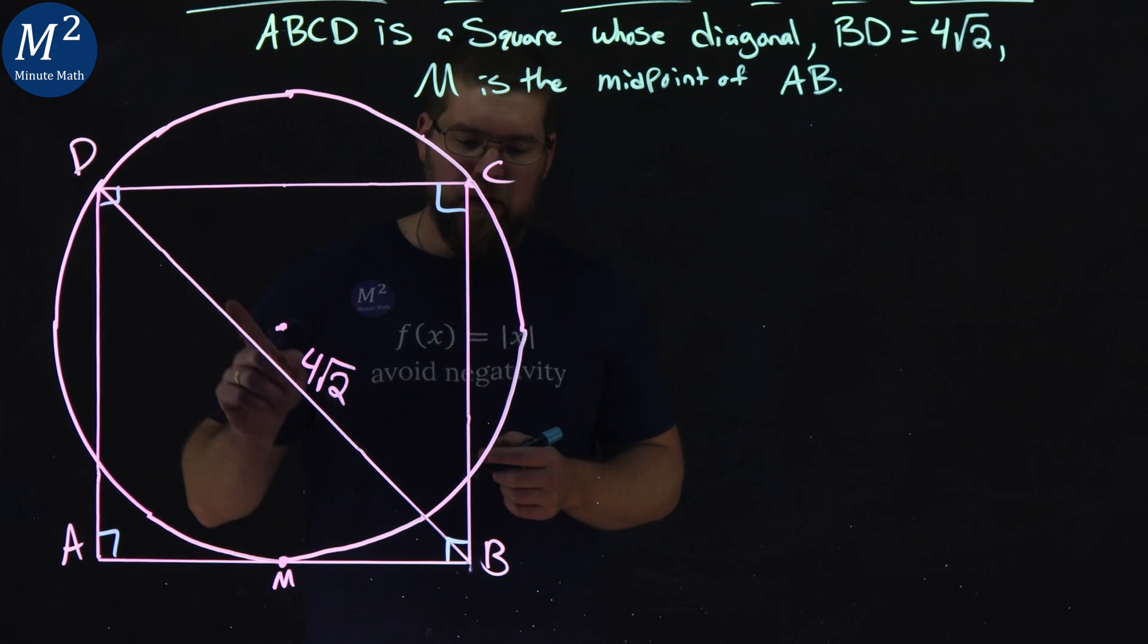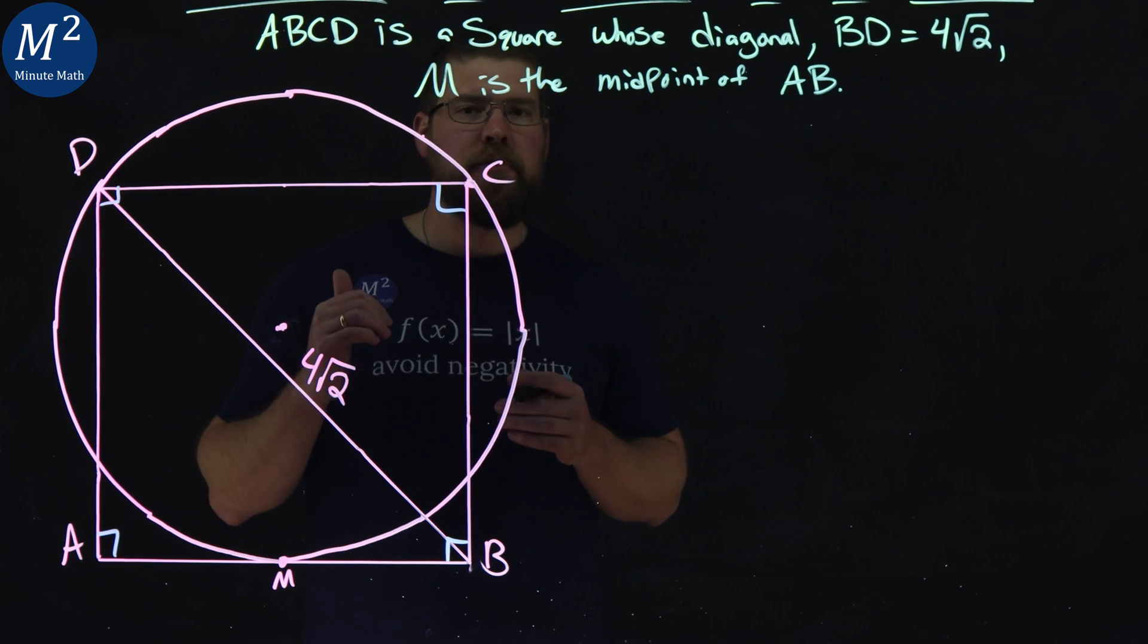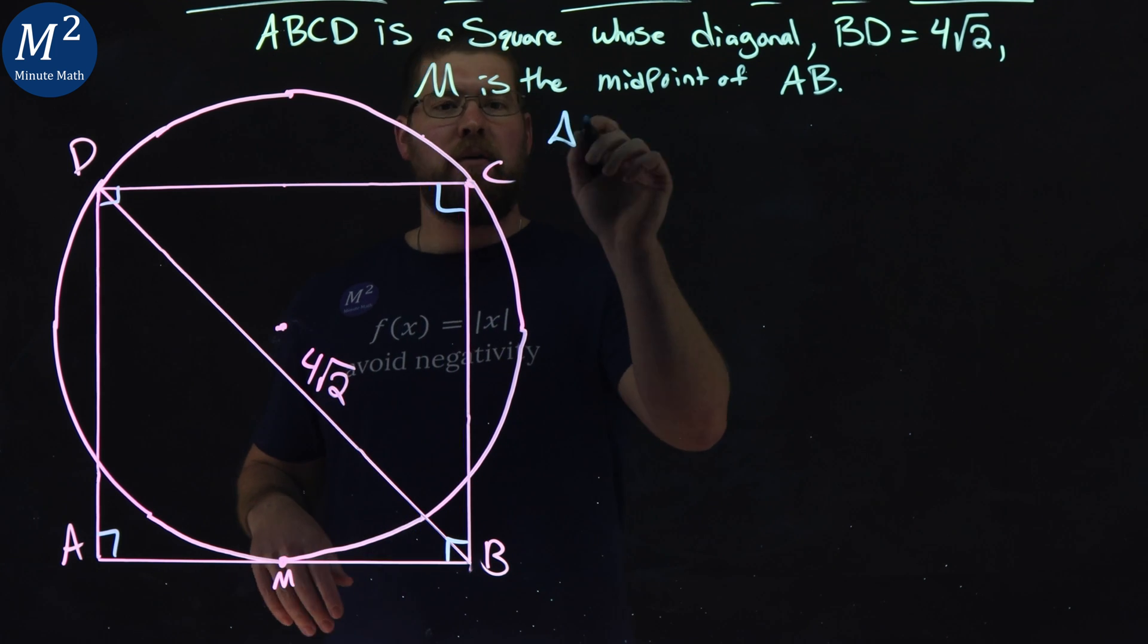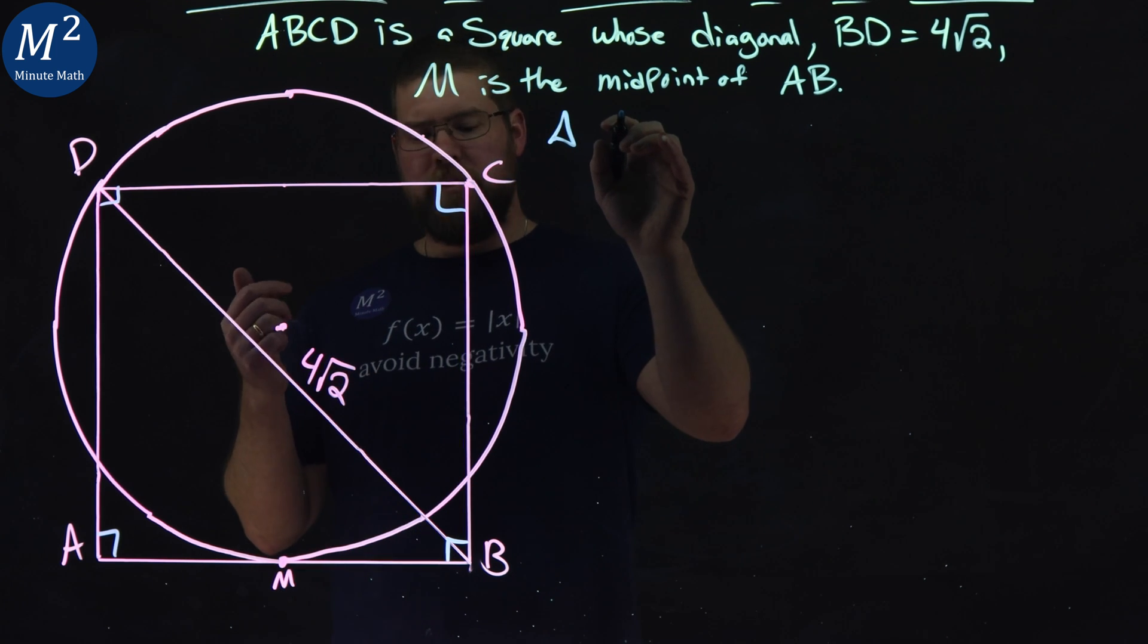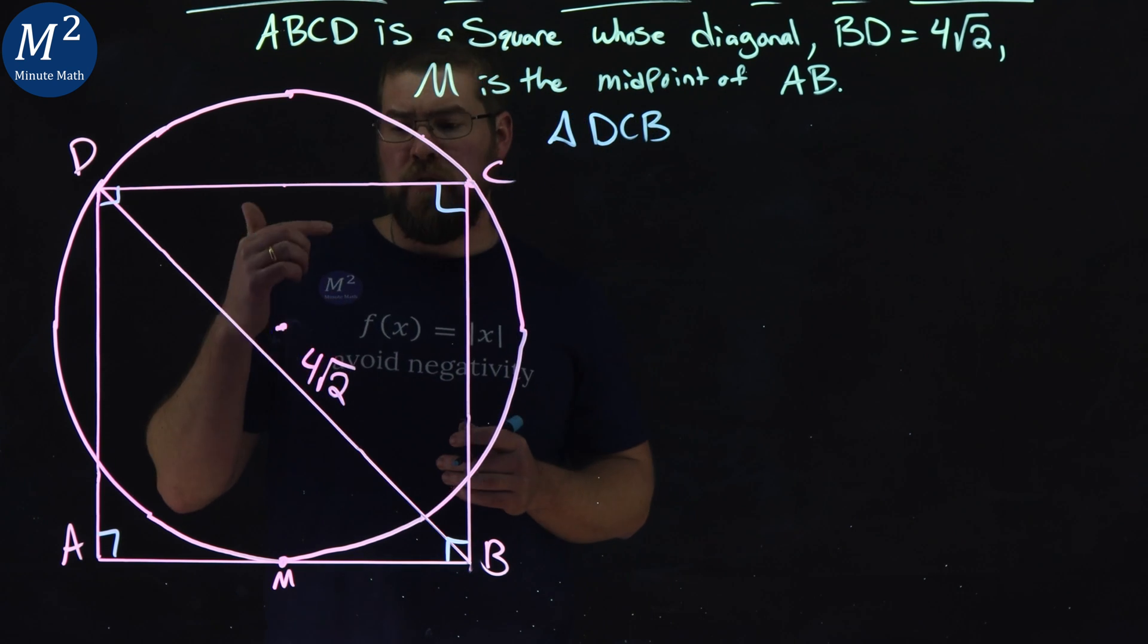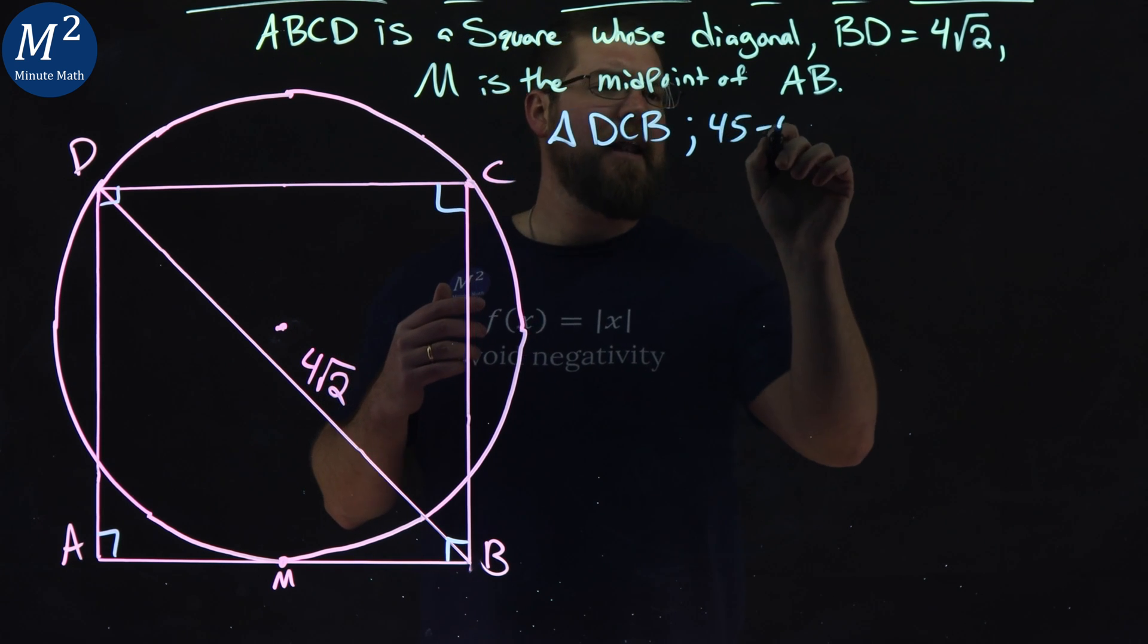Now let's look at this diagonal, BD, 4√2. That's our hypotenuse if we see a right triangle. Triangle, let's call it DCB. DCB is a special right triangle. It's actually a 45-45-90.